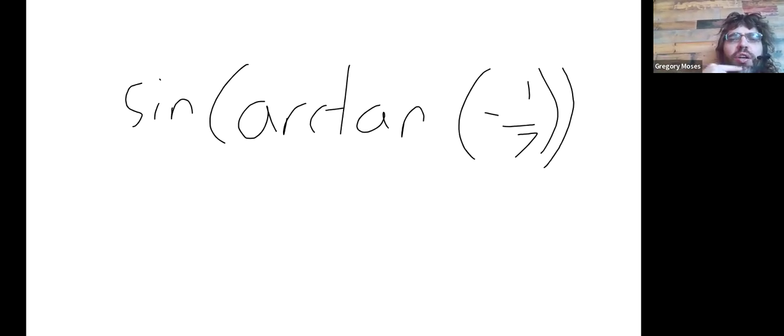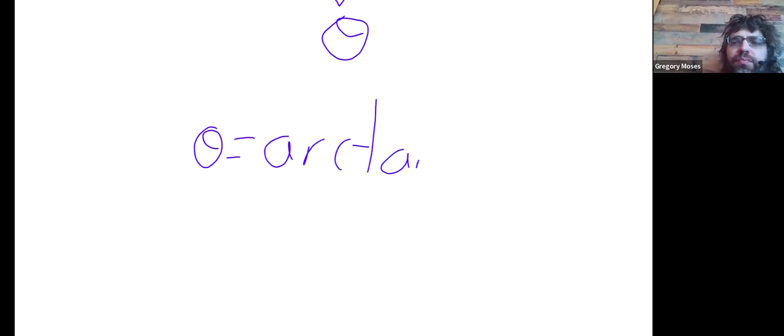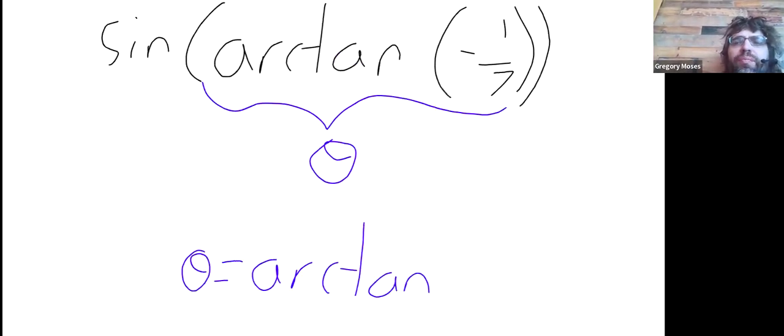So, the trick here, and this trick works if we had the cosine of the arcsine or the tangent of the arc cosine or any combination like that. The trick I'm going to use to allow us to evaluate this is to give this a name. I'm going to call it Theta. So Theta is the arc tangent of negative one-seventh.